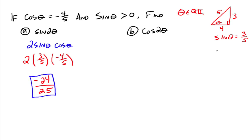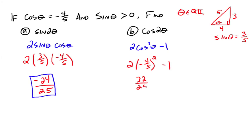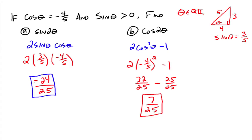Now for cosine of 2 theta — since we already know sine of theta, we could use any of the three identities. I'll use the third form: 2 cosine squared theta minus 1. Plugging in negative 4/5 for cosine theta and squaring: 2 times (16/25) minus 1, which is 32/25 minus 25/25, giving cosine of 2 theta equals 7/25. So if cosine of theta is negative 4/5 and sine of theta is positive, then sine of 2 theta is negative 24/25 and cosine of 2 theta is 7/25.